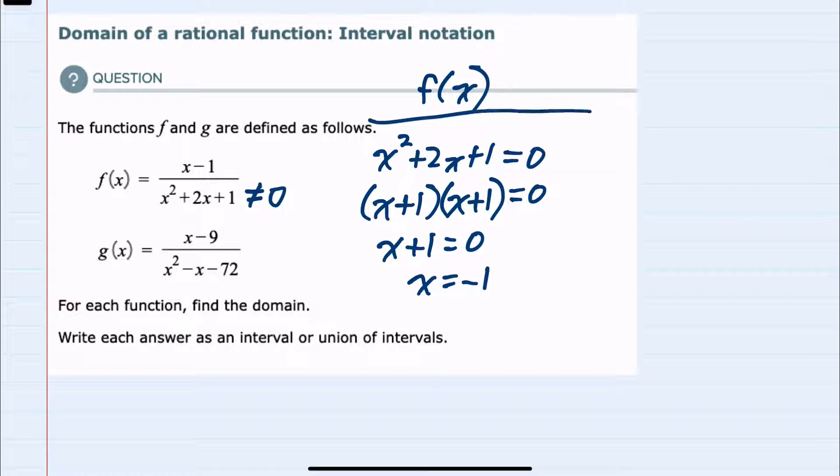So the domain for f of x would be any number except negative 1, because plugging in negative 1 would give me a zero denominator, which is undefined. So to write that as an interval, I would say it could be any number from negative infinity up to negative 1, not including negative 1, and then a union with numbers larger than negative 1, which is negative 1 to a positive infinity. So this is our first domain.